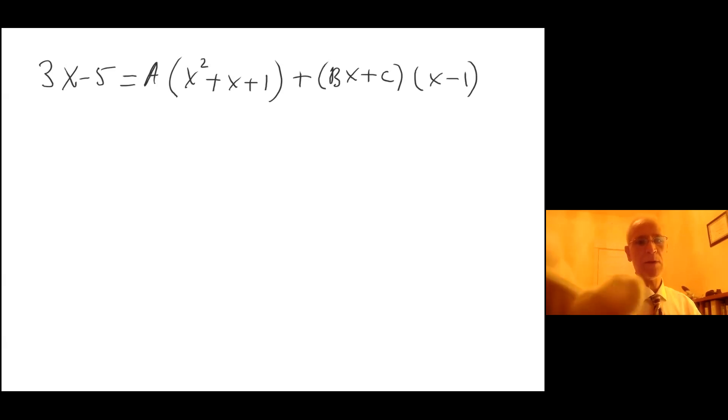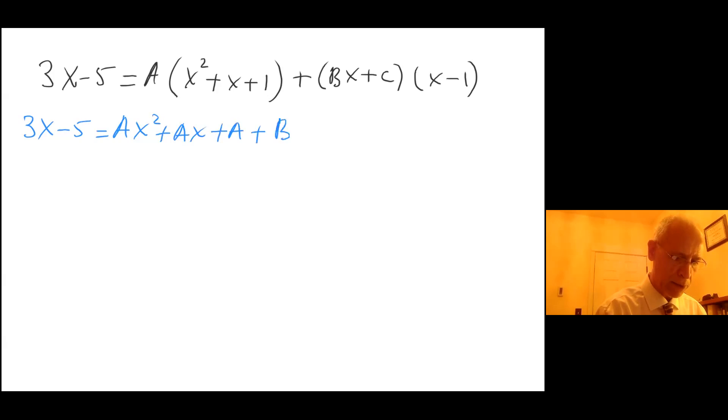Now I'm going to distribute all this on the right hand side. I will get 3x minus 5 equals Ax squared plus Ax plus A plus Bx squared minus Bx plus Cx minus C. Once again I'm going to organize the right hand side.